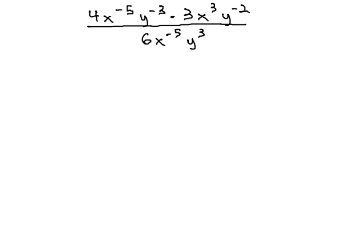In this video, we're going to attempt to simplify the expression 4x to the negative 5th, y to the negative 3rd, times 3x cubed, y to the negative 2nd, all over 6x to the negative 5th, y cubed.